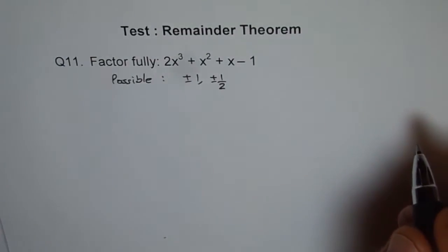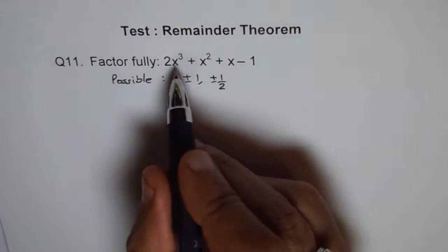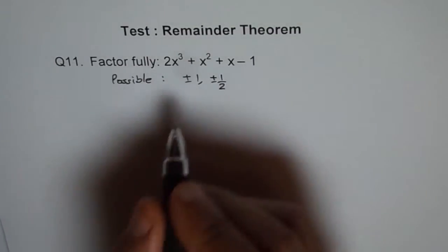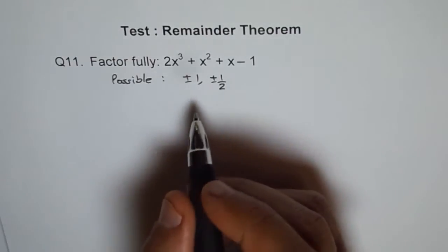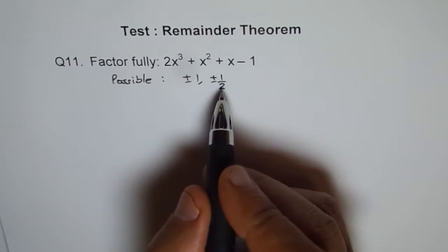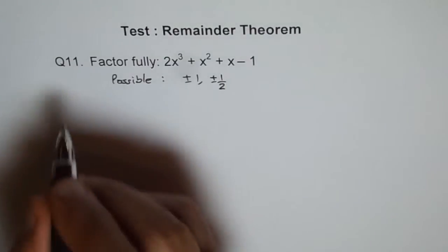Now what we should do is figure out which one of these will give us a remainder which is 0. So we can plug in the values one by one and try it out.